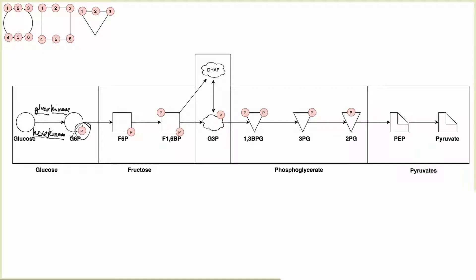Moving on, we have glucose-6-phosphate and we want to convert that into fructose-6-phosphate. To do that we use an isomerase. An isomer has the same number of atoms but they're arranged differently. Fructose-6-phosphate and glucose-6-phosphate are isomers of one another, so the enzyme that converts glucose-6-phosphate into fructose-6-phosphate is phosphoglucoisomerase — 'phosphogluco' meaning we have a phosphorylated glucose being converted into an isomer.